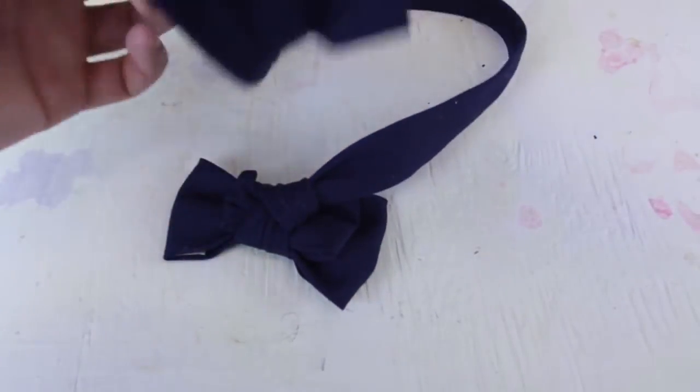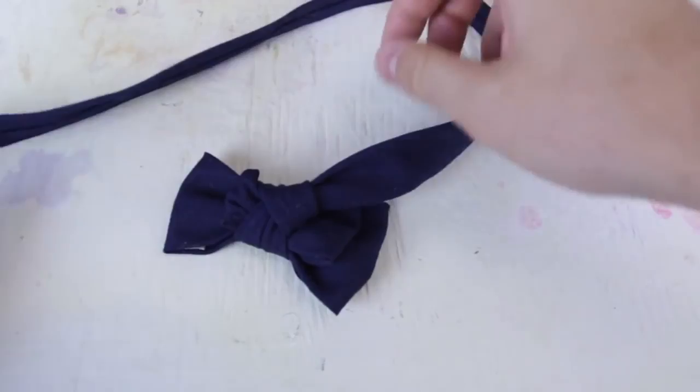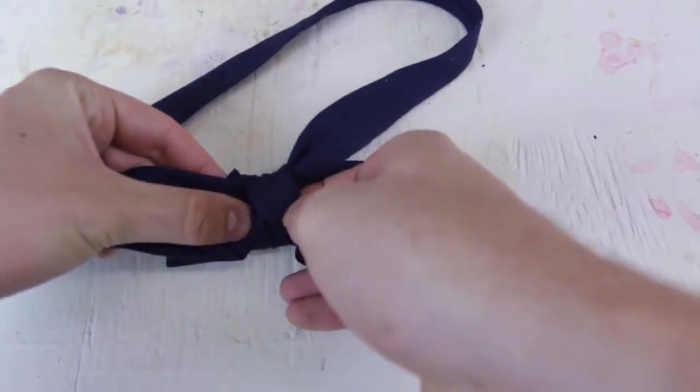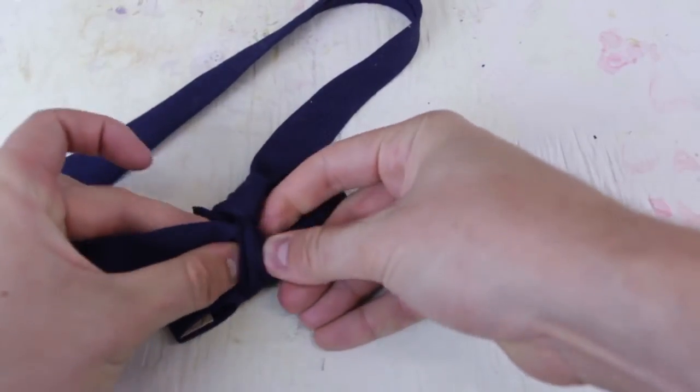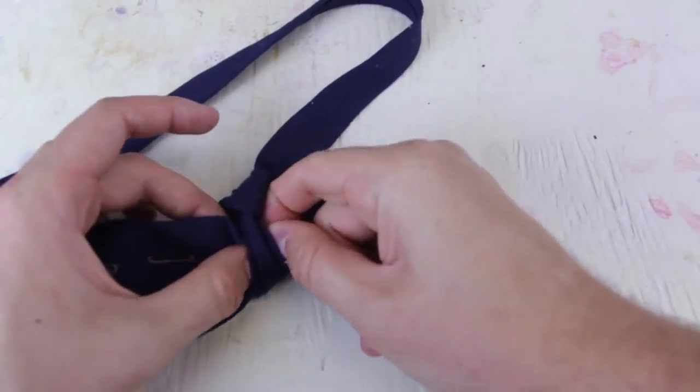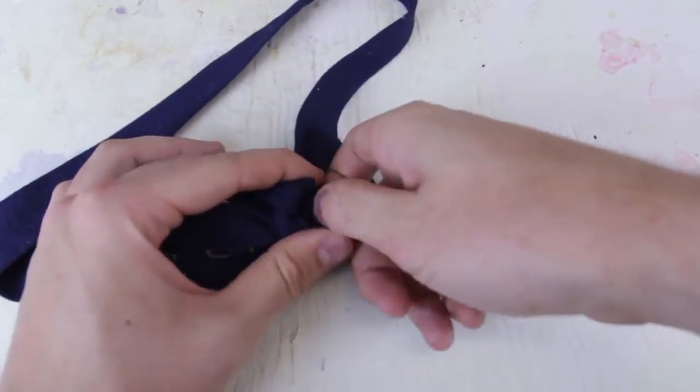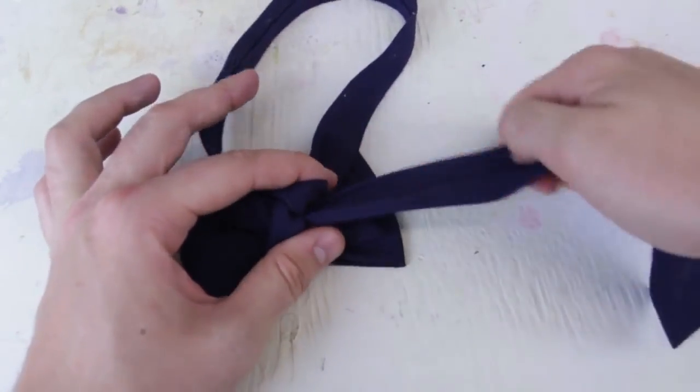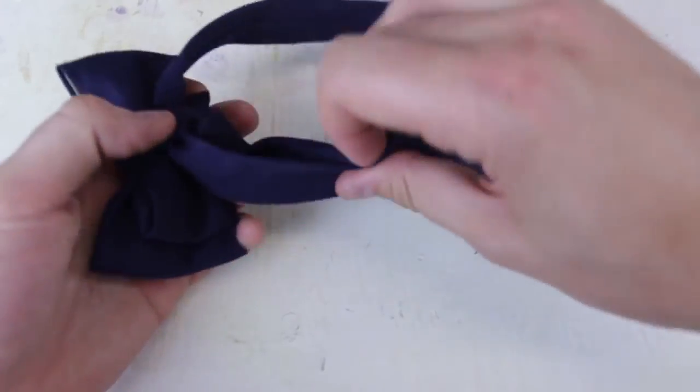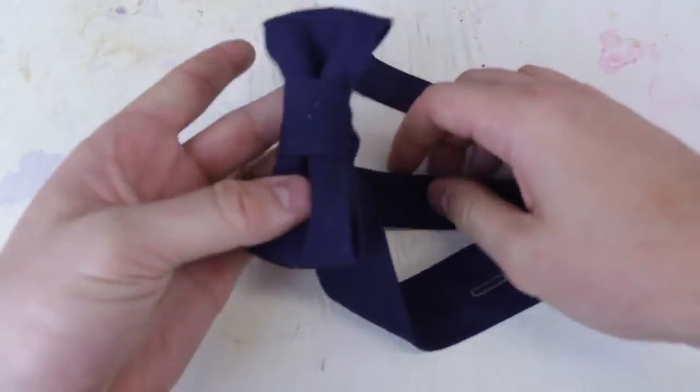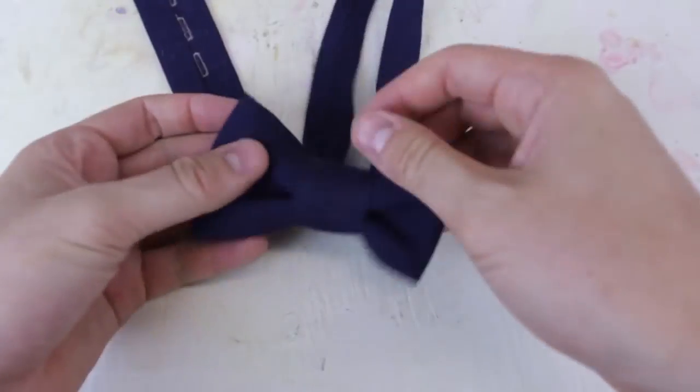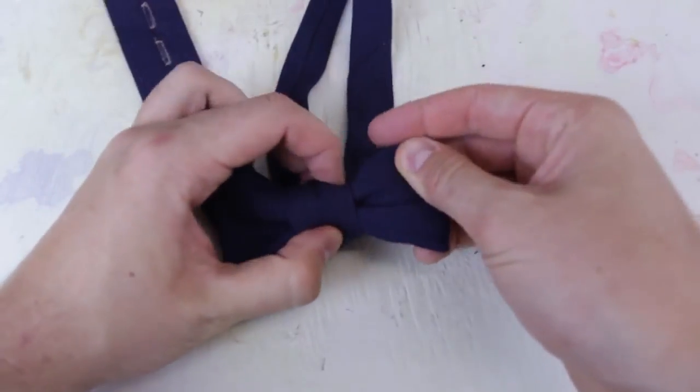...just go around it like that, go under this knot right here. Again, to make it tighter, just pull on this again. And right here we made a bow tie out of a tie, pretty amazing huh?